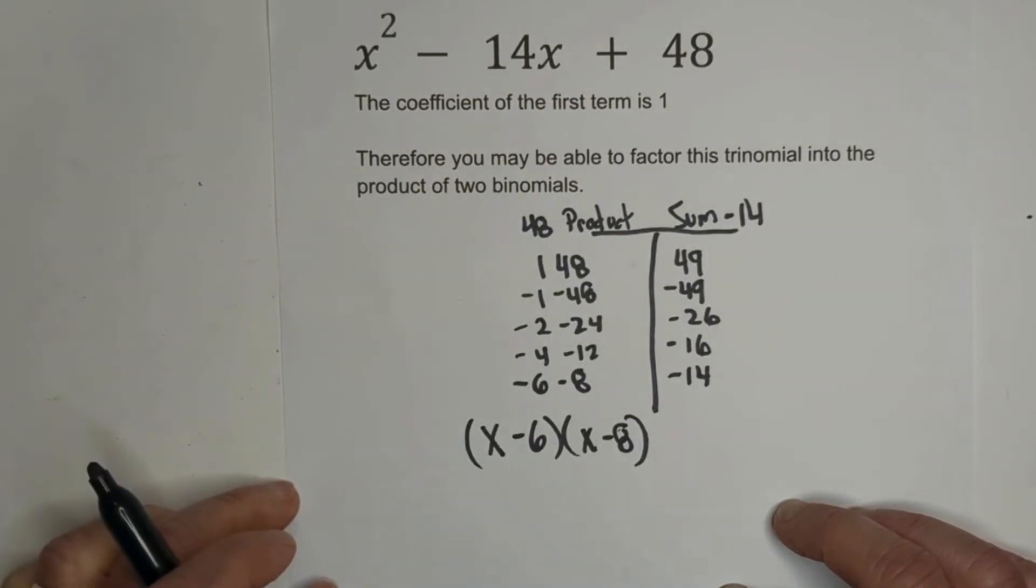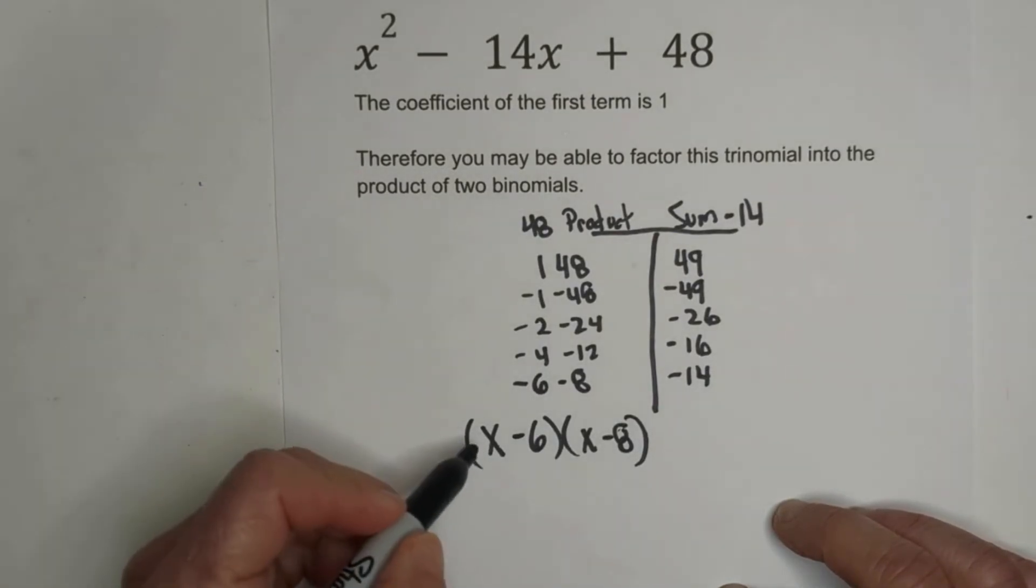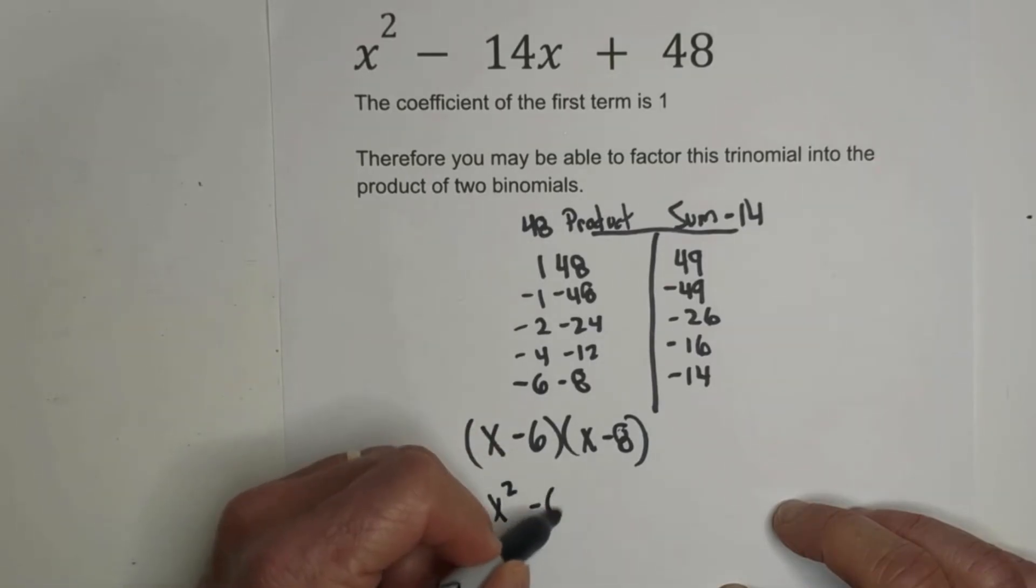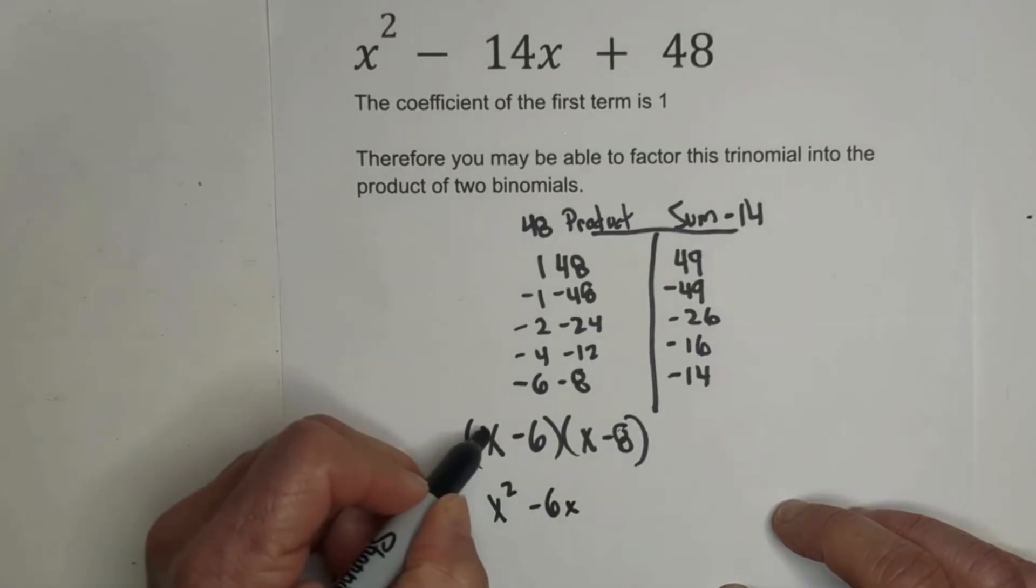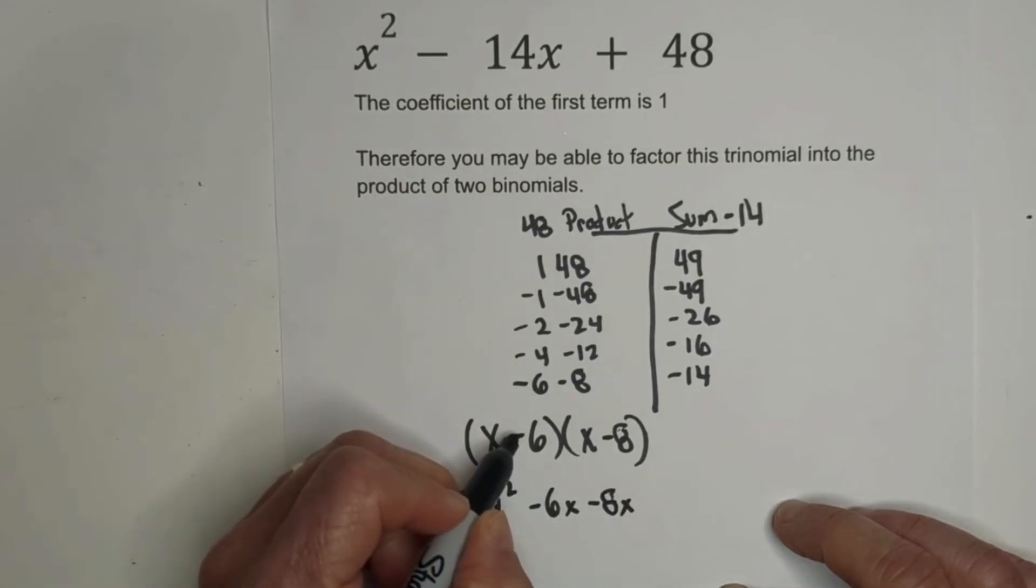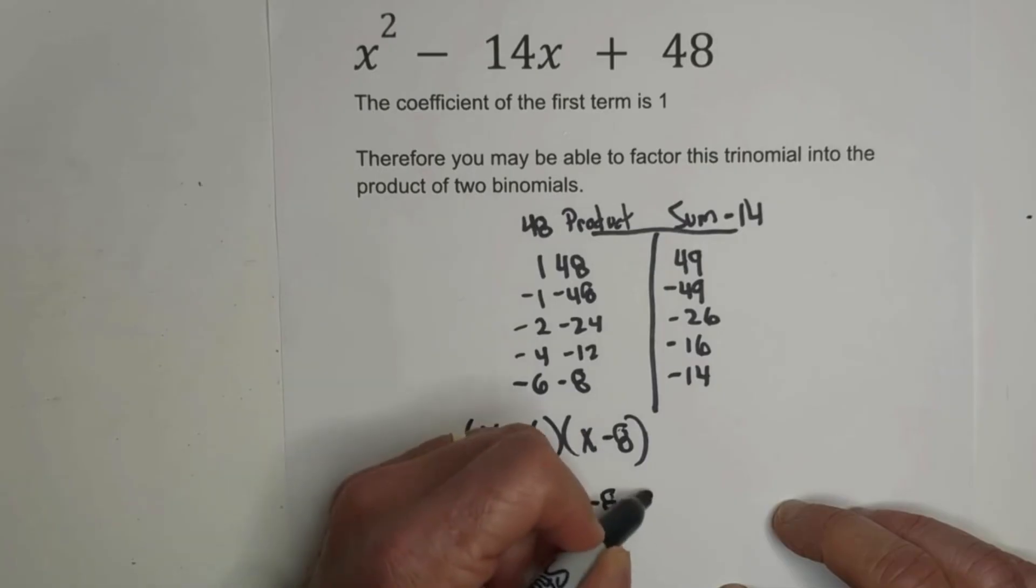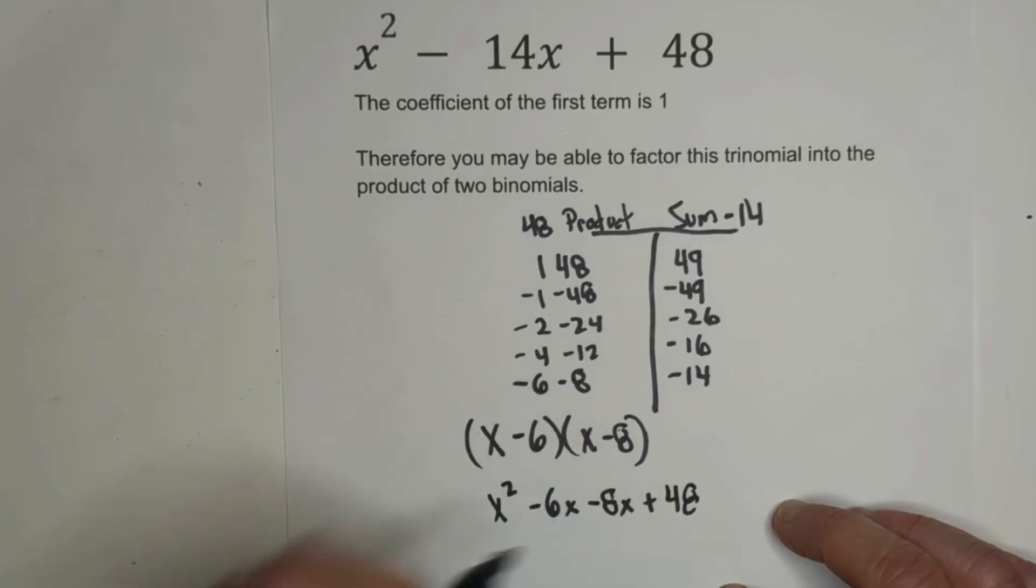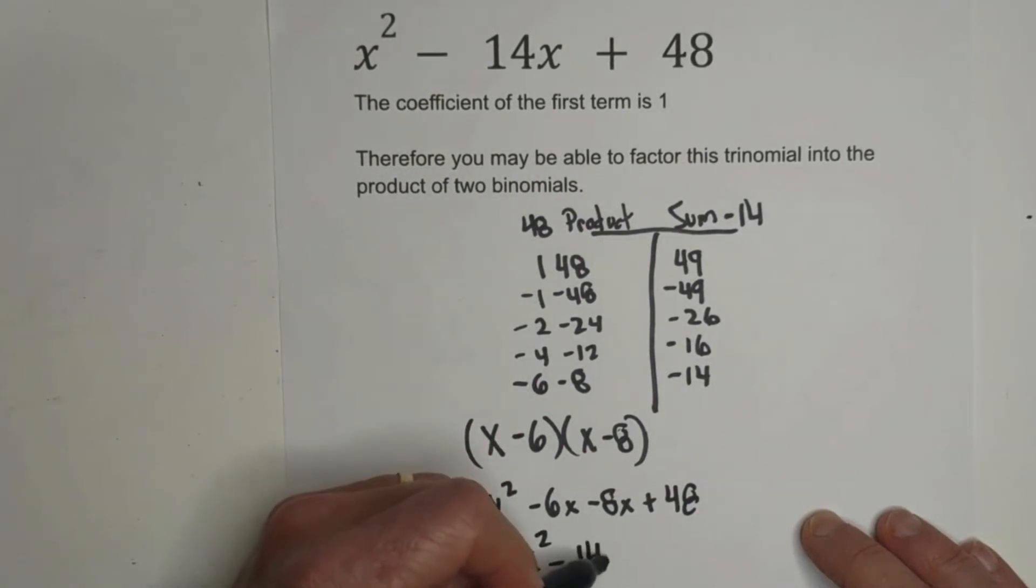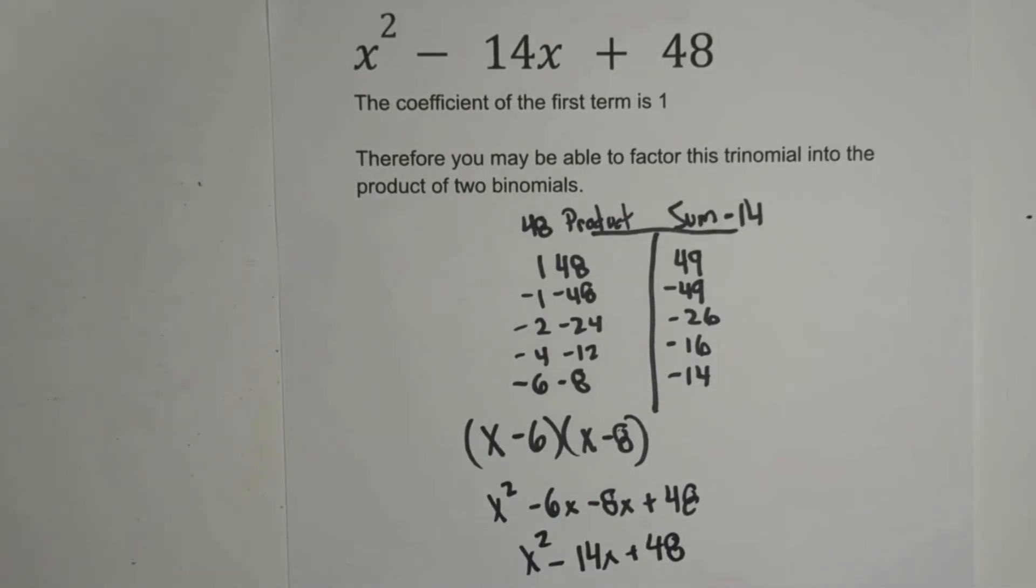So let's check our work. Let's FOIL. First, X times X is X squared. Inner, negative 6 and X is negative 6x. Outer, X times negative 8 is negative 8x. And the last, negative 6 and negative 8 is a positive 48. Let's see. Add these two together. Negative 6x and negative 8x is negative 14x plus 48. So it looks like we have it factored properly.